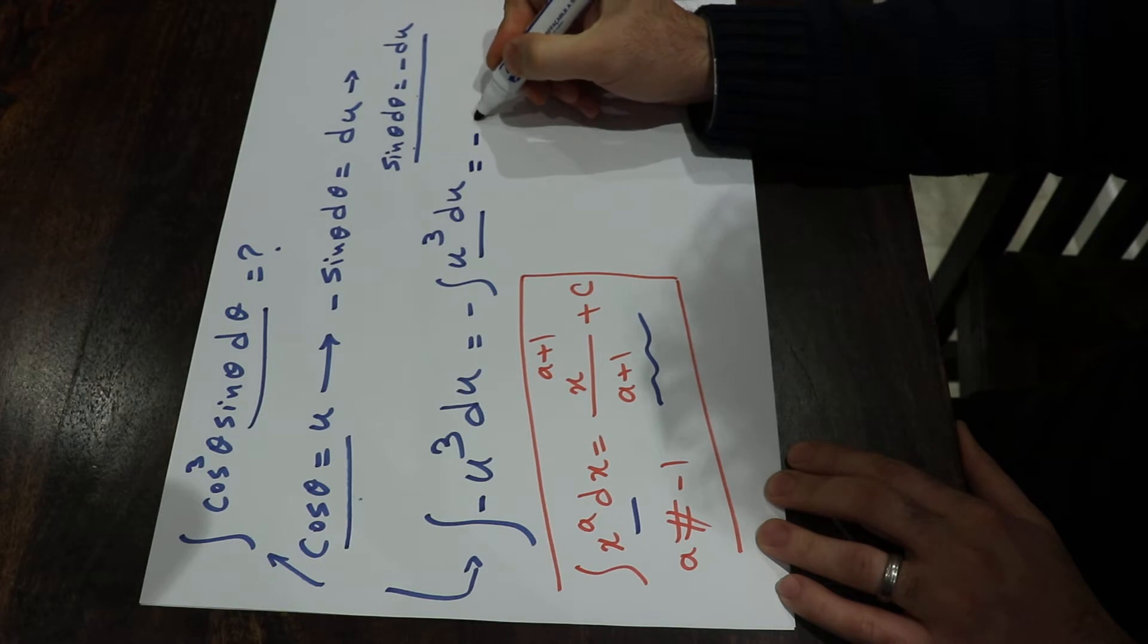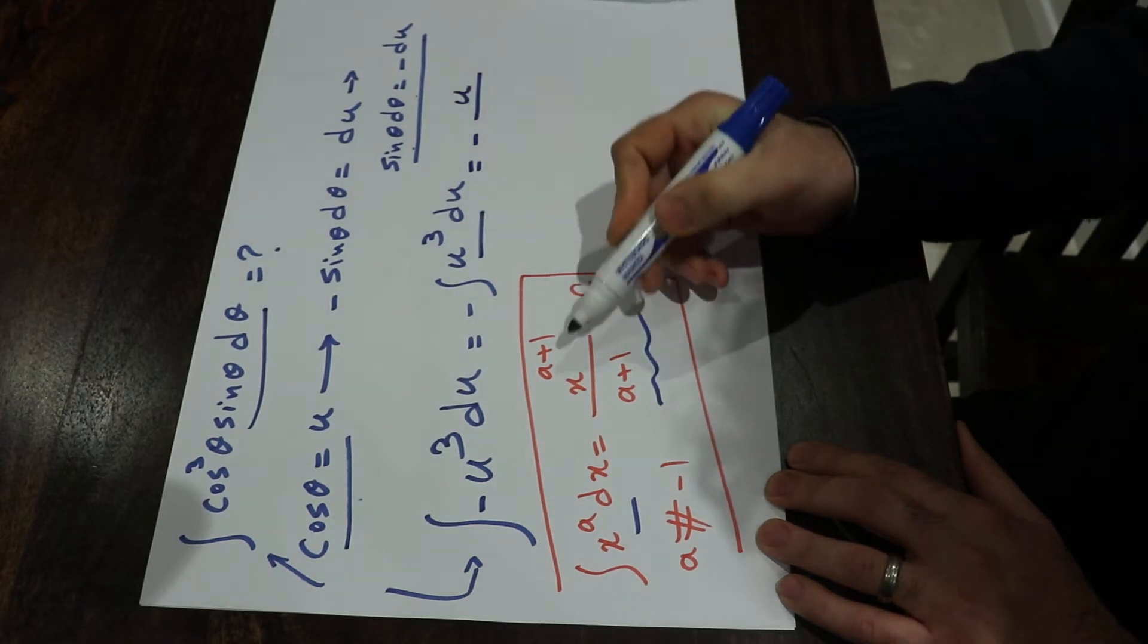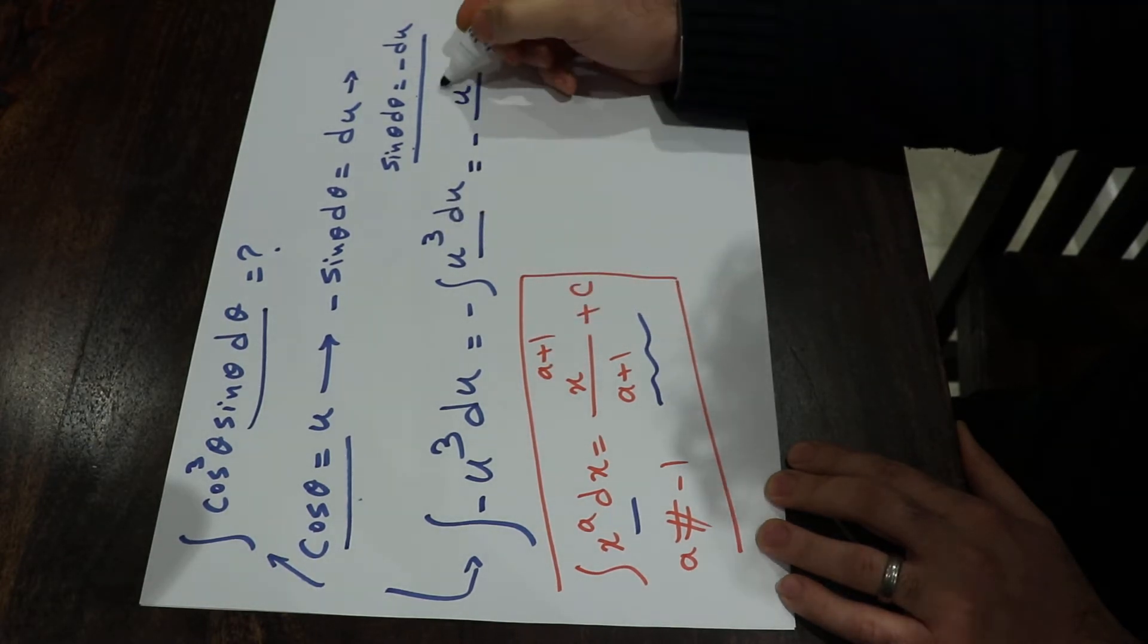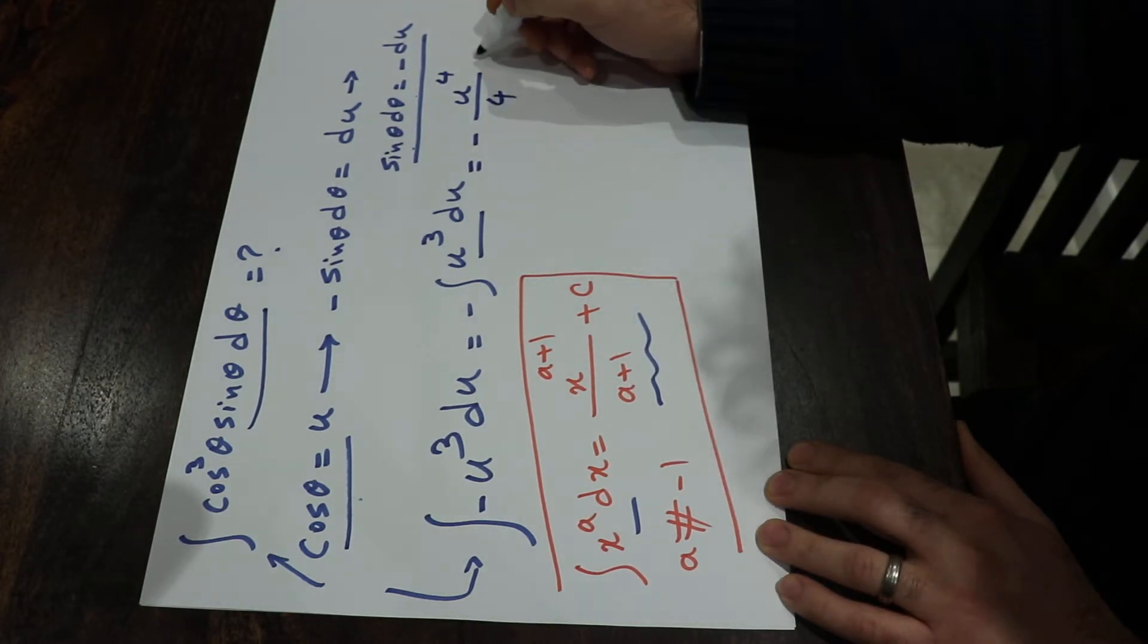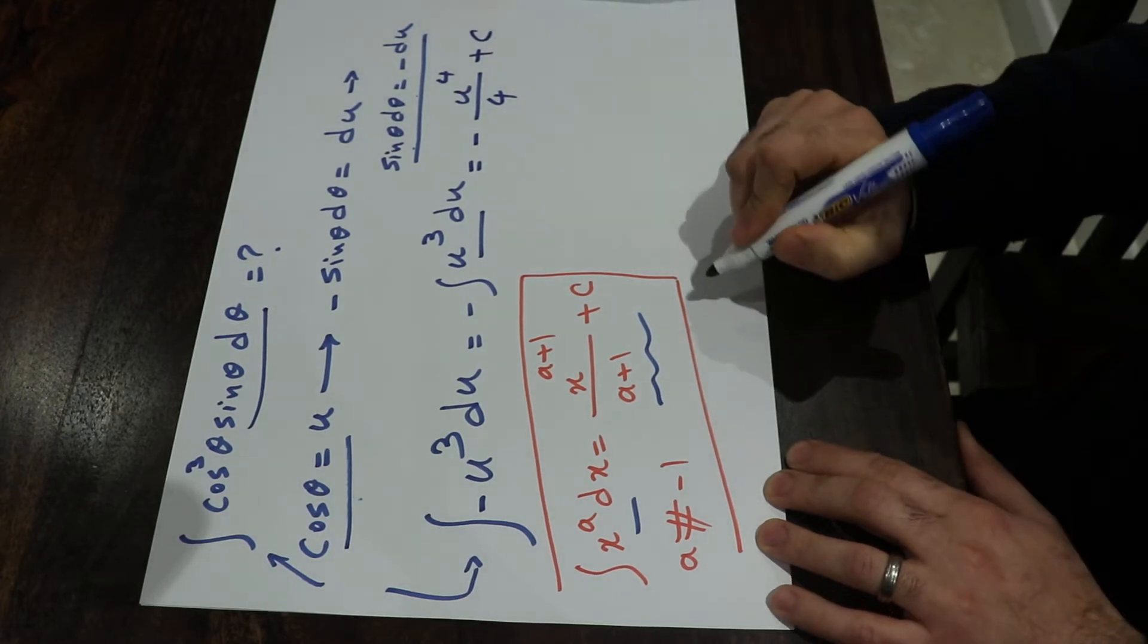which will be equal to minus u with the power of a plus 1. A is 3, 3 plus 1 is 4, divided by a plus 1. That is 3 plus 1 is 4, plus c, the constant of the integral.